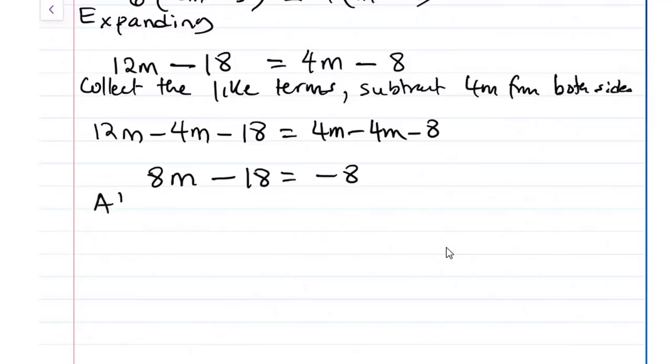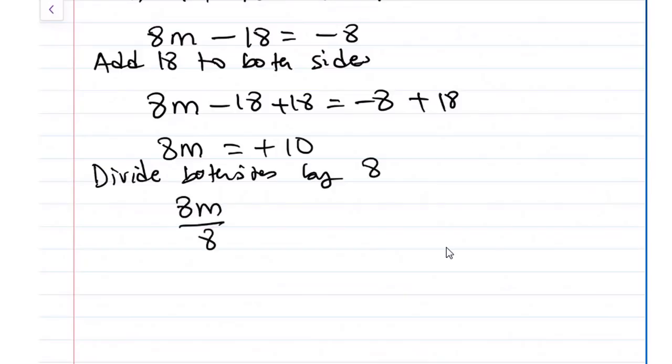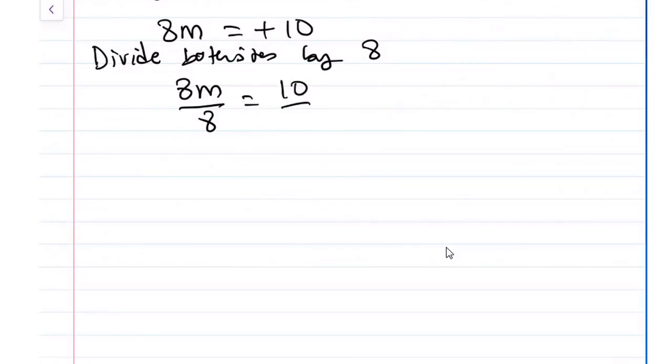To determine the value of m, we are going to add 18 to both sides. So that will give us 8m minus 18 plus 18 and then minus 8 plus 18. So that becomes 8m equals to plus 10. Now we can say divide both sides by 8. So we have 8m over 8 equals to 10 over 8. And this gives us m because 8 will cancel out. And that will be 10 over 8 or 1 and 1 over 4.